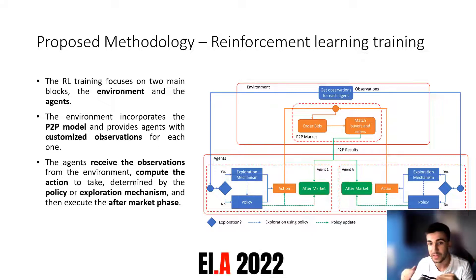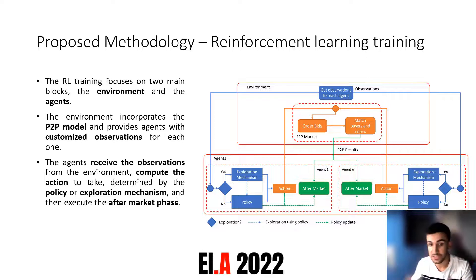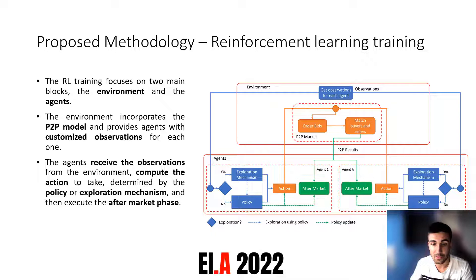Passing now to the reinforcement learning training: we split the focus into two main areas — the environment and the agents. The environment provides the agents with the peer-to-peer energy market and generates observations for each agent. The agents receive observations from the environment, compute the actions to take either by the policy or by the exploration mechanism, and then execute the aftermarket phase — which is the interaction with the grid to buy or sell the remaining energy from the peer-to-peer markets.